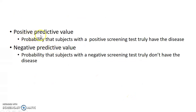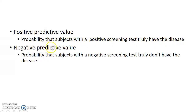Positive predictive value is the probability that subjects with a positive screening test truly have the disease. Negative predictive value is the probability that subjects with a negative screening test truly do not have the disease.